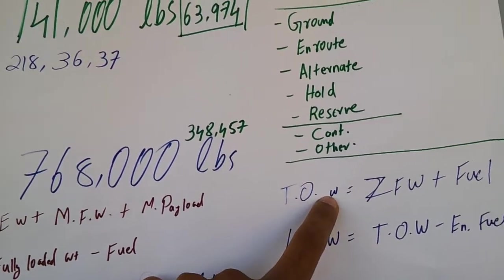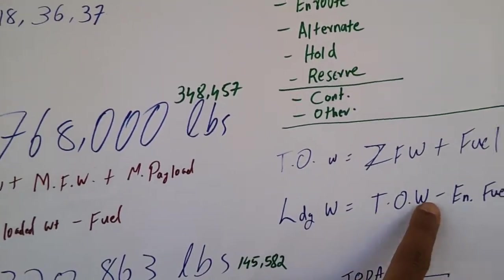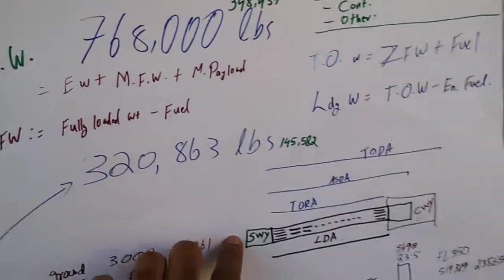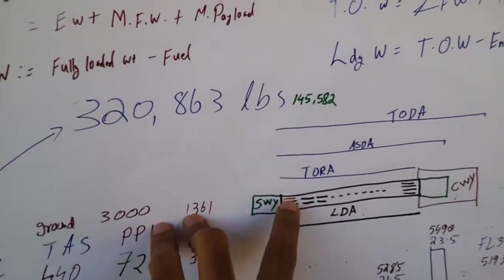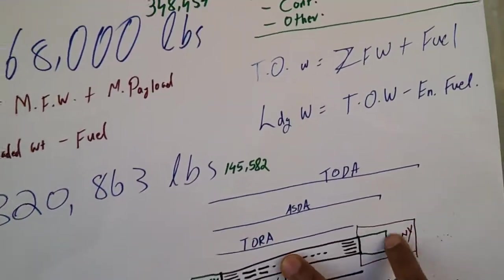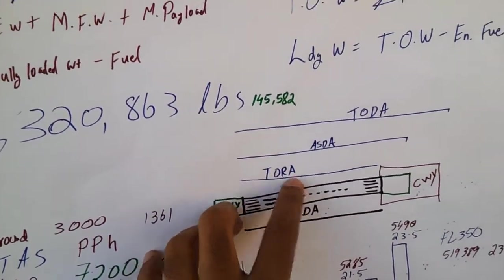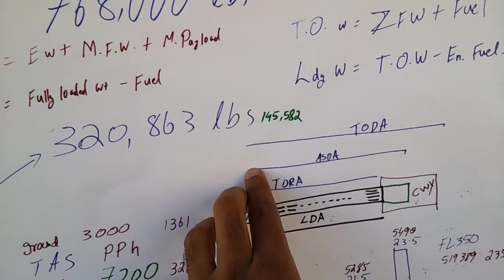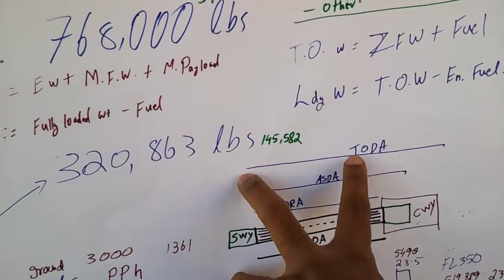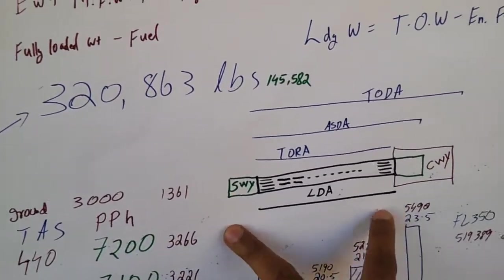Here is takeoff weight equals zero fuel weight plus fuel. Landing weight is takeoff weight minus - I'm sure you get a better chart on internet instead of this. A little bit about the stopway, landing distance and clearways. This is the stopway and this the clearway. Takeoff run available is here. Accelerated stop distance available until here. And takeoff distance available until here including the clearway. Landing distance available is here.